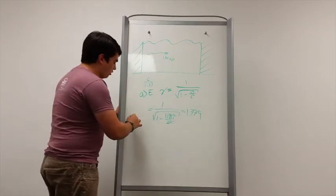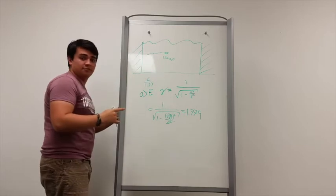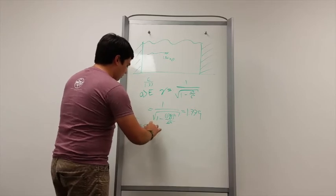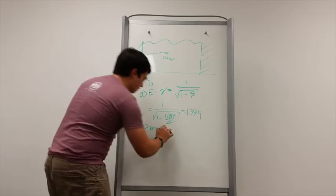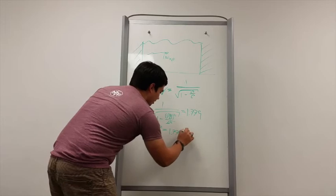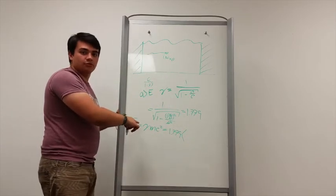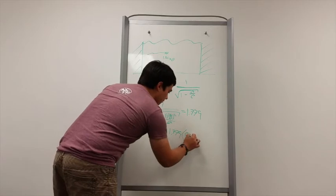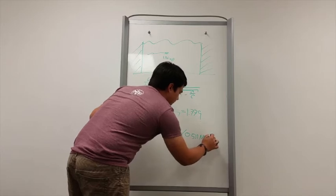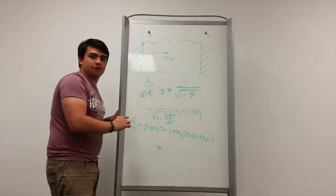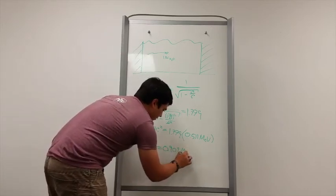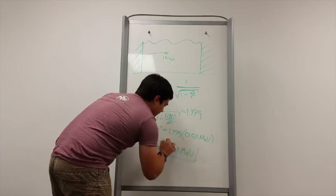And then, since it's a moving particle at relativistic speed, to calculate its total energy, we multiply the gamma factor times the mass times c squared. The gamma factor we already have, it's 1.779. And c squared times the mass of an electron is 0.511 mega electron volts. The result of this factor is 0.909 mega electron volts, and that's the total energy of the moving electron.